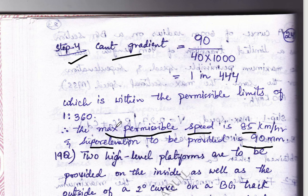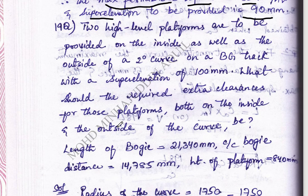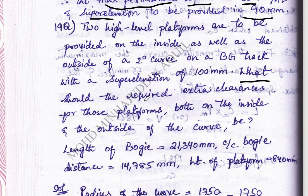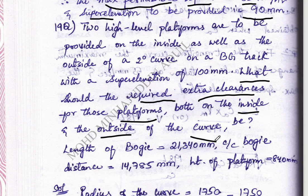Moving towards the next type of problem. In this problem we have to calculate extra clearance required at the platforms, for both inside as well as outside of the curve. The values given are the degree of curvature for BG track.